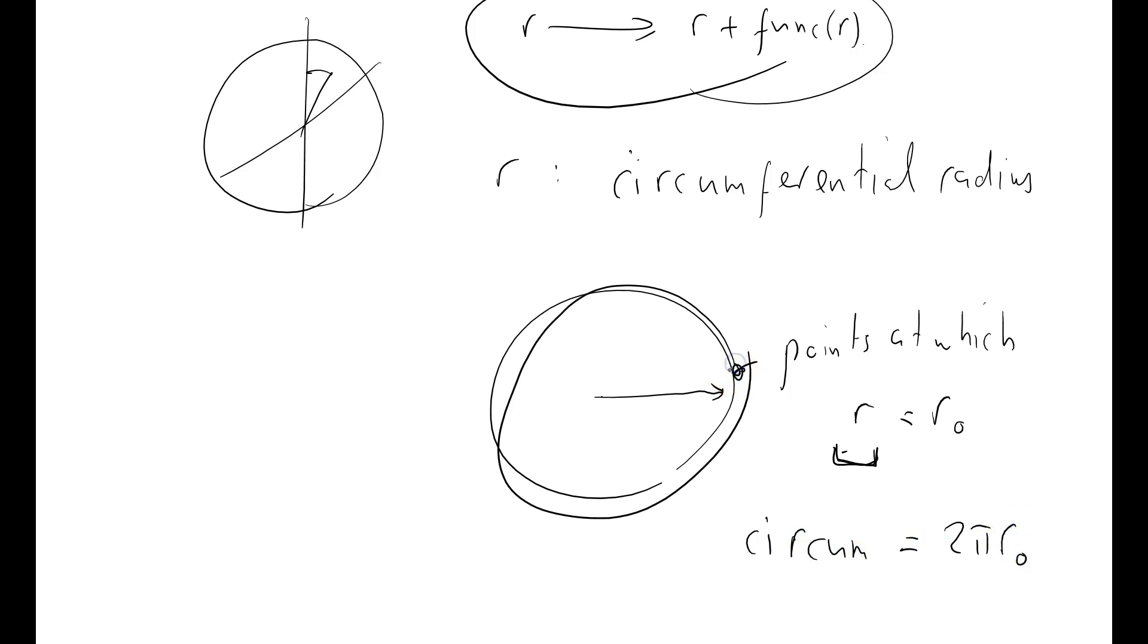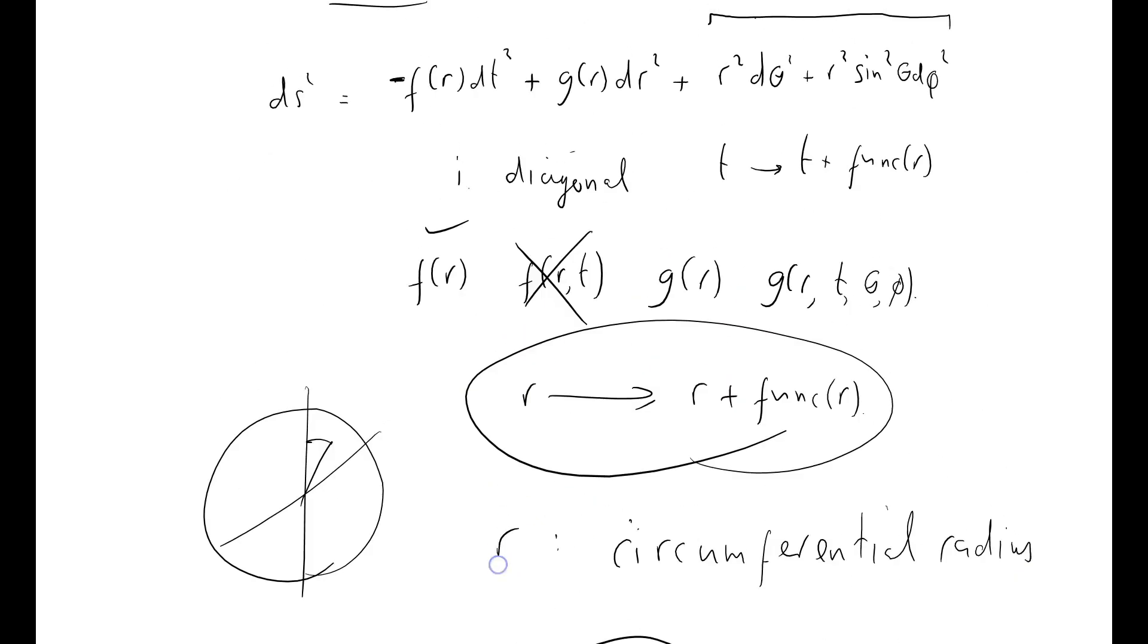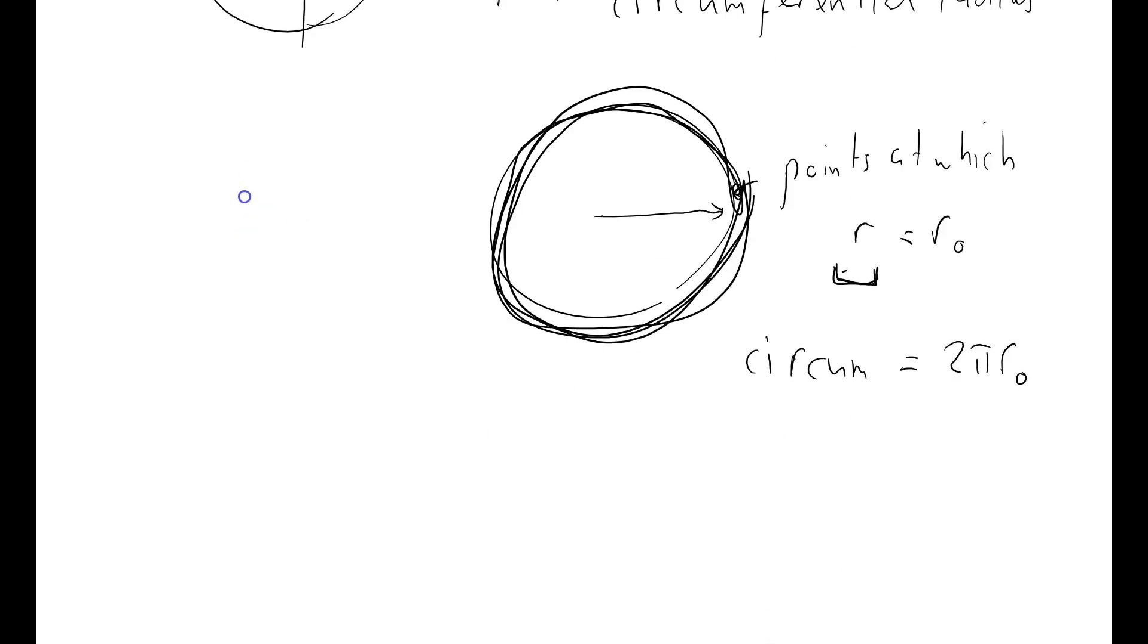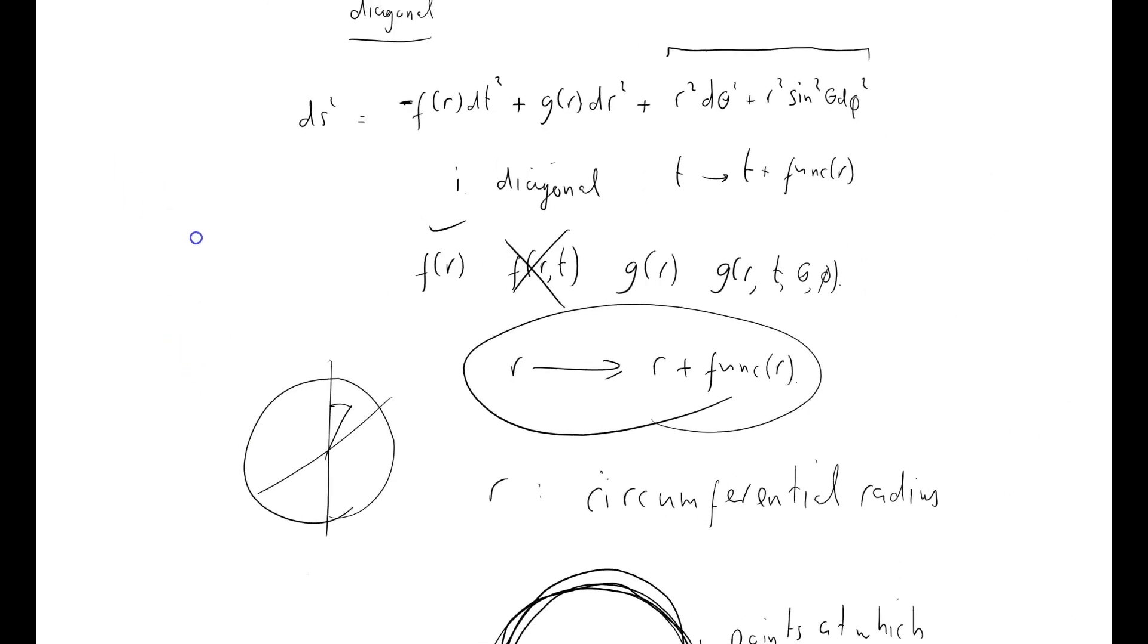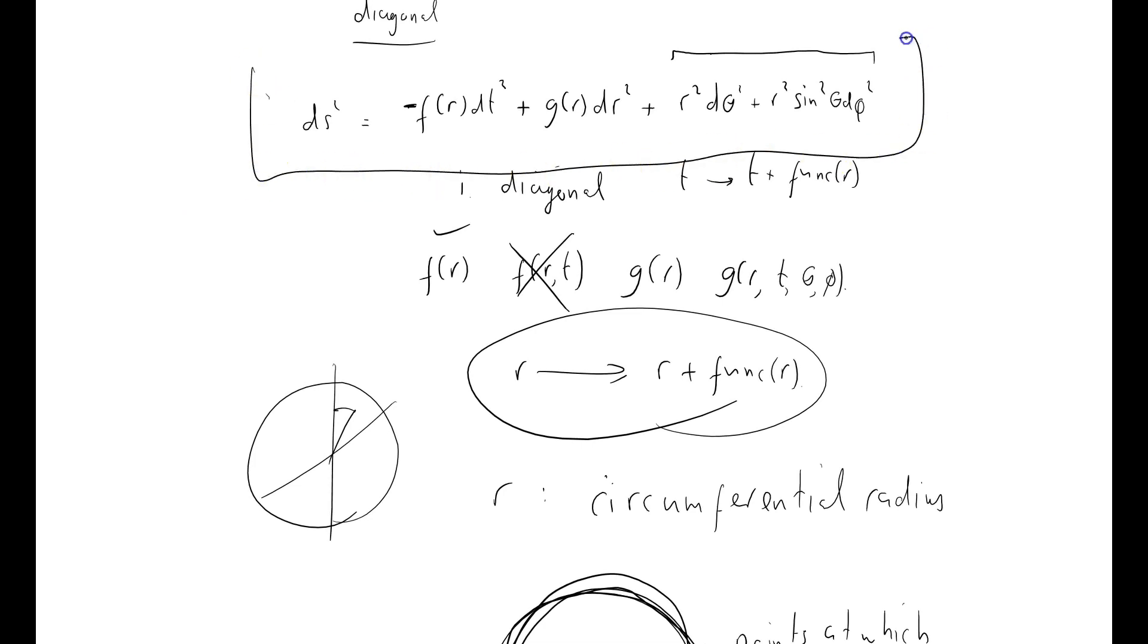So I'm considering this rather straightforward generalization of flat space. There's no time component in there, there's nothing other than a radial and a time component. And I'm going to see what happens. Alright, I'm going to stop now.